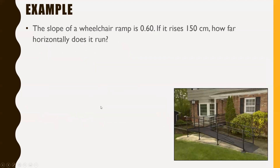Here's another example — a little more creative because this time we're given the slope. The slope of a wheelchair ramp is 0.60. If it rises 150 centimeters, how far horizontally does it run? You can pause the video here and give this one a try on your own — you just need to use the rise over run formula.